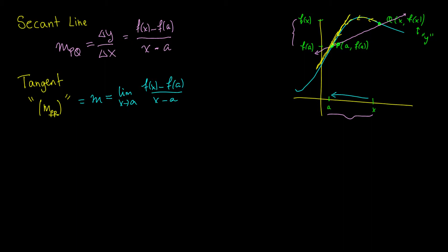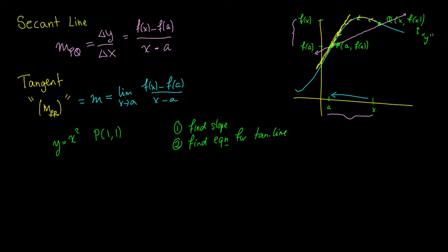Let's do an example. Suppose we're given the equation y = x² and the point (1, 1). We want to: one, find the slope of the tangent line, and two, find the equation of the tangent line. We take m equal to the limit as x approaches a, and since a = 1, this is the limit as x approaches 1 of f(x) — which is x² — minus f(a), and f(a) = f(1) = 1.